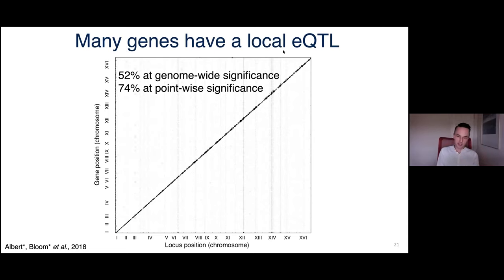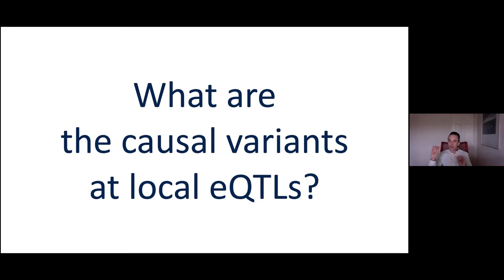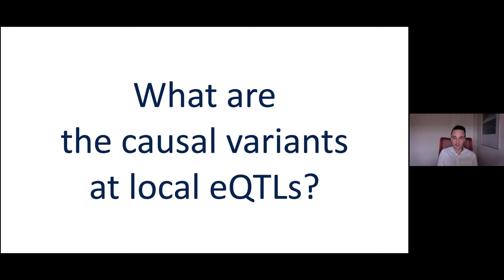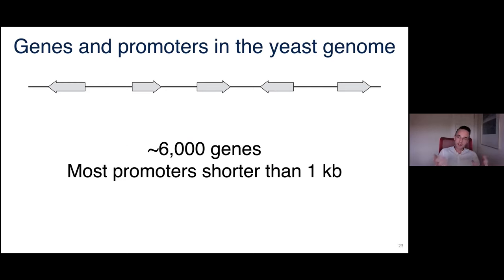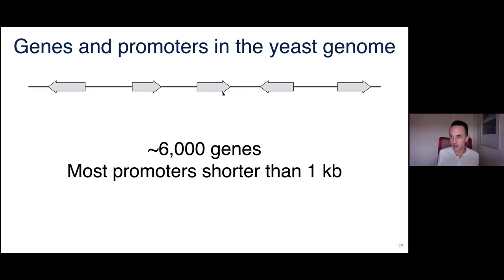Let's talk about this local variation for the next 15 minutes or so. We'll use these local eQTLs as a model for understanding the nature of causal variants — specifically asking: what are the causal variants at local eQTLs? Here's a view of the yeast genome: each arrow is a gene, most are single-exon, separated by about a kilobase of intergenic space containing promoters, with 6,000 genes in total.